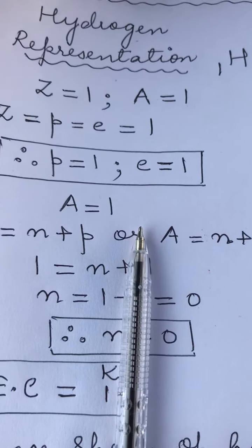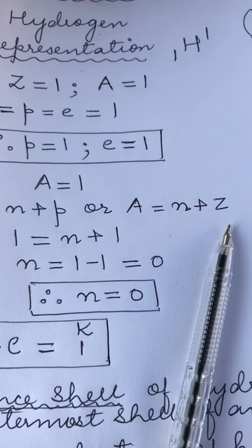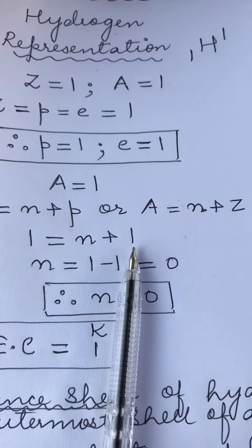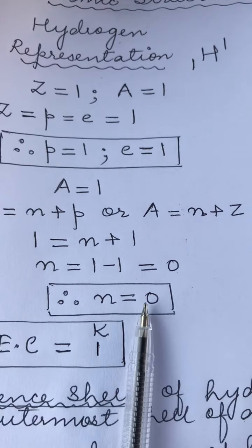So A we know is 1. So using the formula A equals to N plus P or A equals to N plus Z, we calculate the number of neutrons which come out to be 1 is equal to N plus 1, N is 1 minus 1 which is equal to 0. So neutrons come out to be 0.